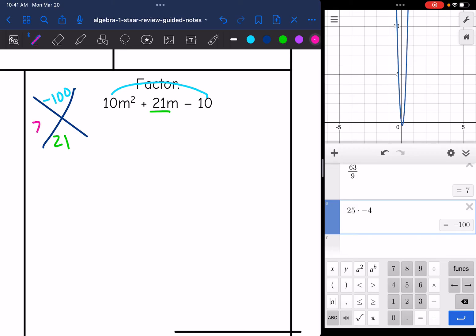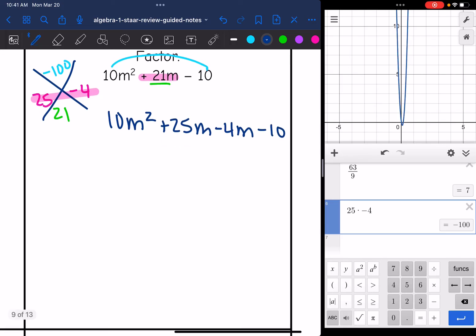25 and negative 4. So now since this one's not a basic trinomial, I'm going to split this 21m into 25m minus 4m, and then I'll have four terms and can factor by grouping. So I get 10m squared, I'm going to put plus 25m minus 4m for the 21m, and then bring down the minus 10. And now I have four terms.